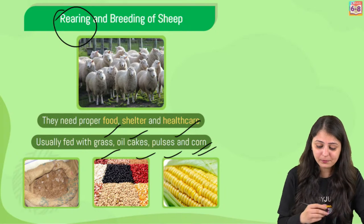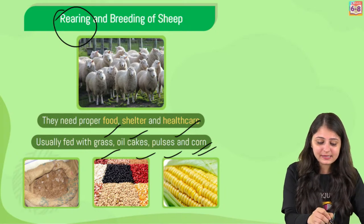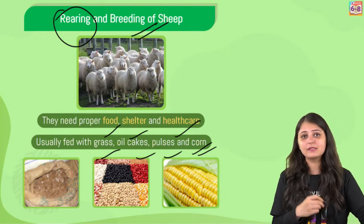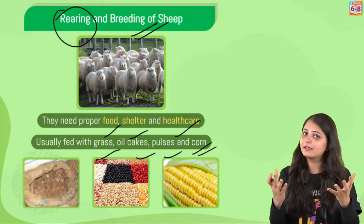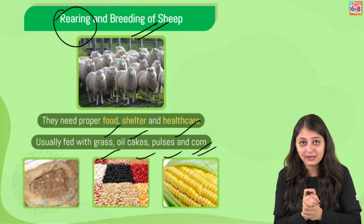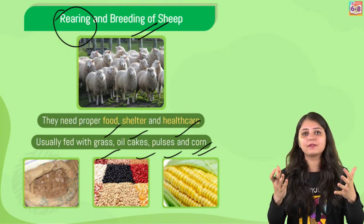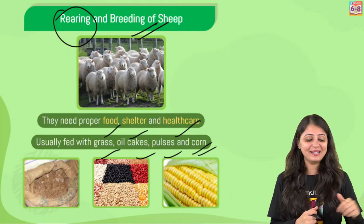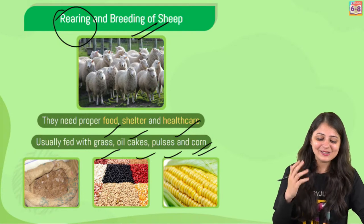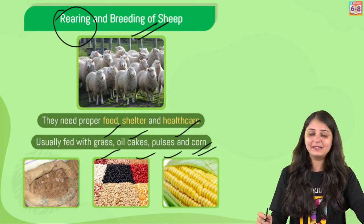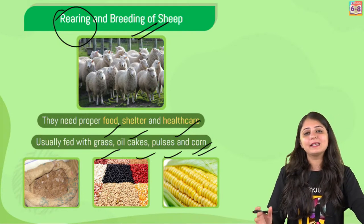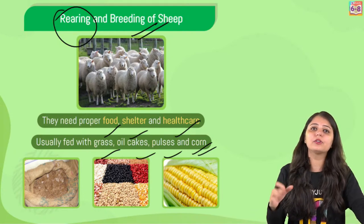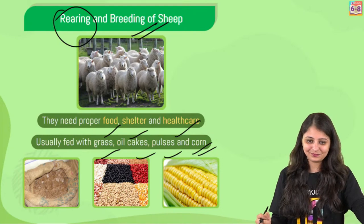Coming to breeding - it's actually the process of selecting parents in order to have certain characteristics in their offspring. So as we were discussing selective breeding just now - that is breeding. It's basically to have very good quality of wool in the offspring.